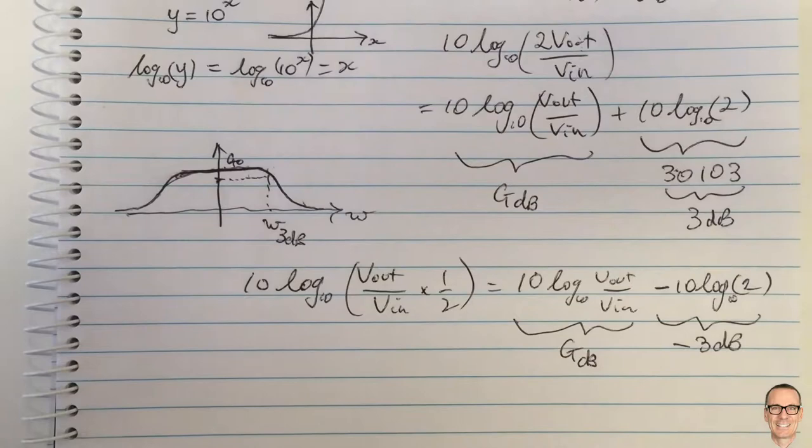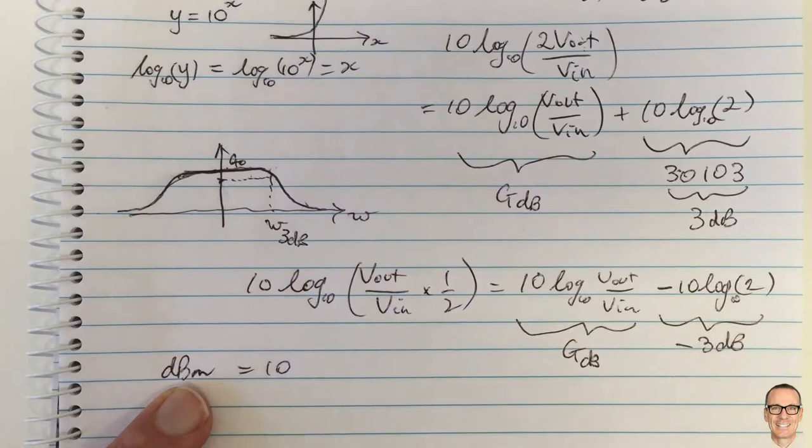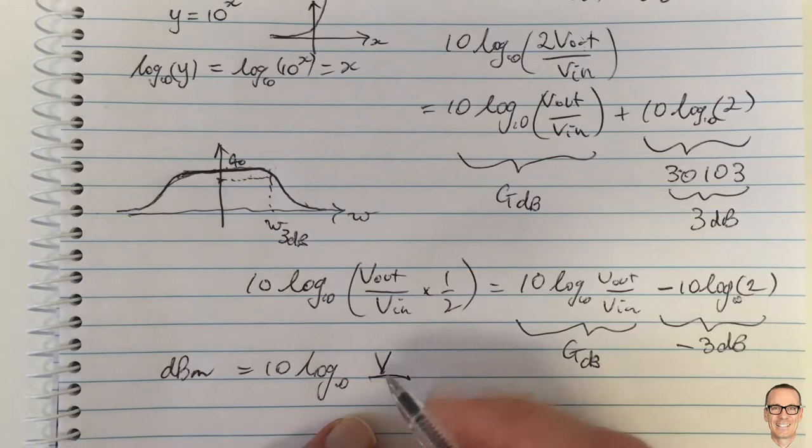...and one other final thing is that if you don't have a ratio you have another parameter called dBm and you often see this around so what is that well that is the decibel of your value related to one millivolt if it's a voltage so this is log to the base 10 of the value that you're interested in the voltage of interest divided by one millivolt...